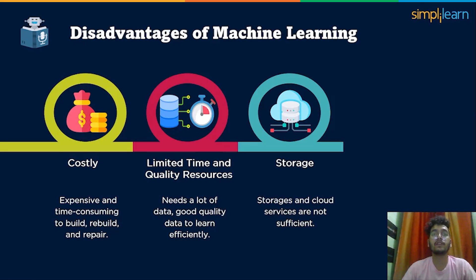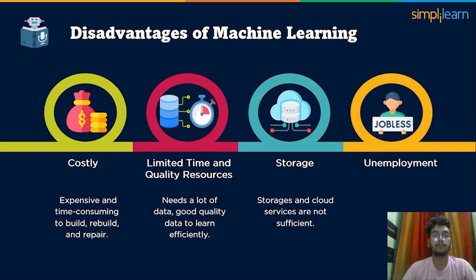For a machine to learn, storing potential information is a continuous activity, and different storage solutions and cloud services are not sufficient to store this amount of large data. The last disadvantage is unemployment — machine replacing human jobs can lead to significant unemployment. Now that we have an understanding of the advantages and disadvantages, let's move forward and discuss different types of machine learning.